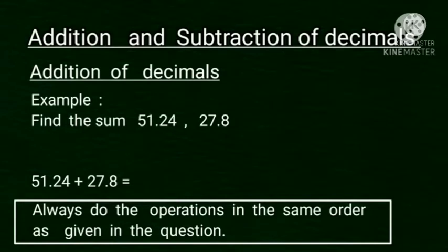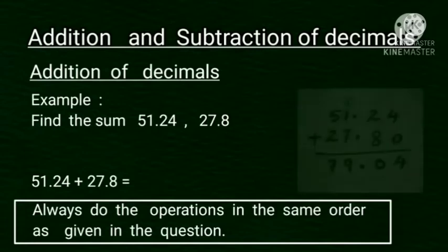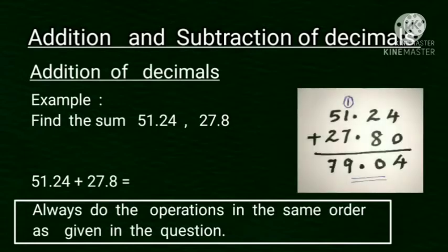We always do the operations in the same order as given in the question. Here, 51.24 plus 27.8. Here, in order to, we add 0 after the digit 8.